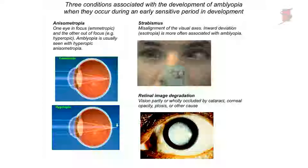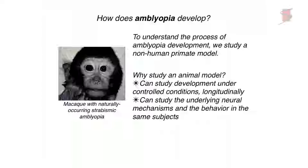We wonder how amblyopia comes about and how it develops. The value of an animal model here is important: this condition naturally occurs in 3 to 4 percent of children, but you need to study it under environmentally controlled conditions. Amblyopia might present in a child at school age when they're having difficulty reading, but the etiology occurred much earlier — it could have been blur, a crossed eye, or something else. So studying this longitudinally under controlled conditions is extremely important.